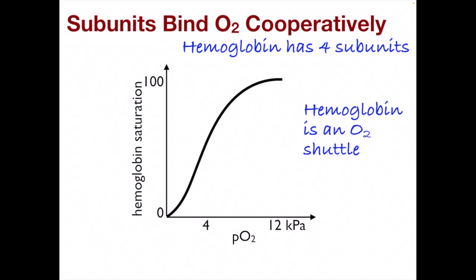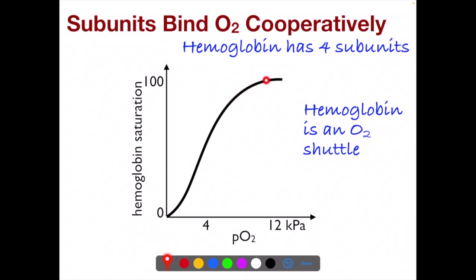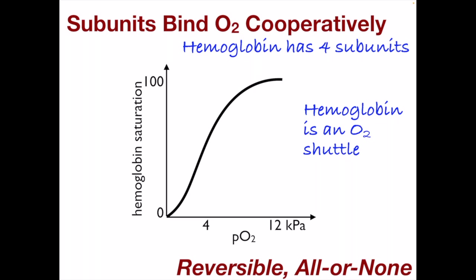Hemoglobin has four subunits, and it binds O2 cooperatively. That means that if one of them is bound with oxygen, they all tend to be bound with oxygen. And if one of them is dropping its O2, they all tend to dump their O2. That's what gives the dissociation curve its sigmoidal shape — it's not linear. It does tend to flip to be high affinity or flip to be low affinity, making it a really fantastic oxygen shuttle. It's reversible and all or none.